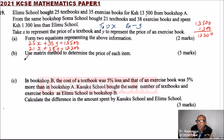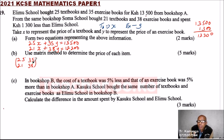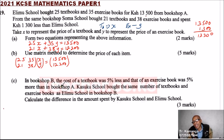This is how you write the matrix. We write the coefficient matrix as: row one is 25, 35 and row two is 21, 38. Then we have the variable matrix with X and Y, which equals the constants matrix: 13,500 and 12,200.